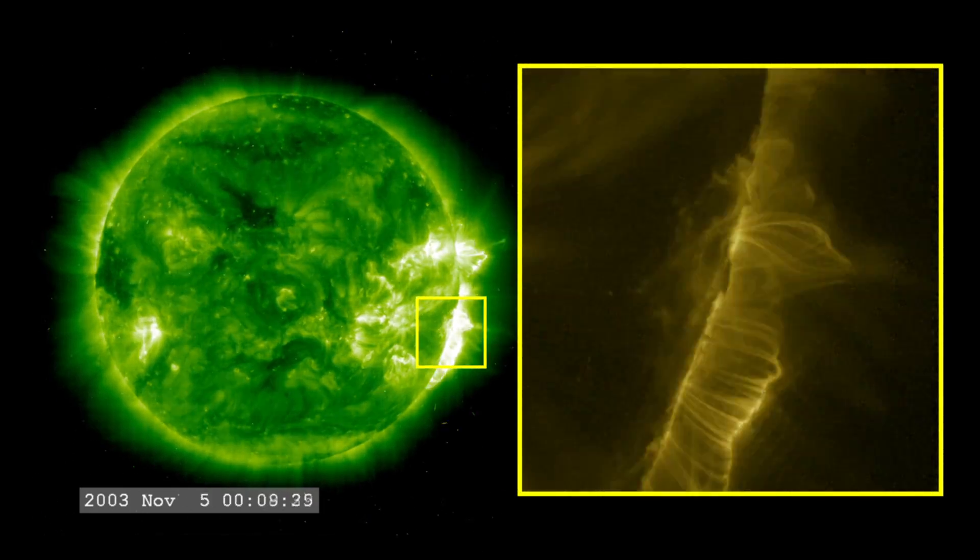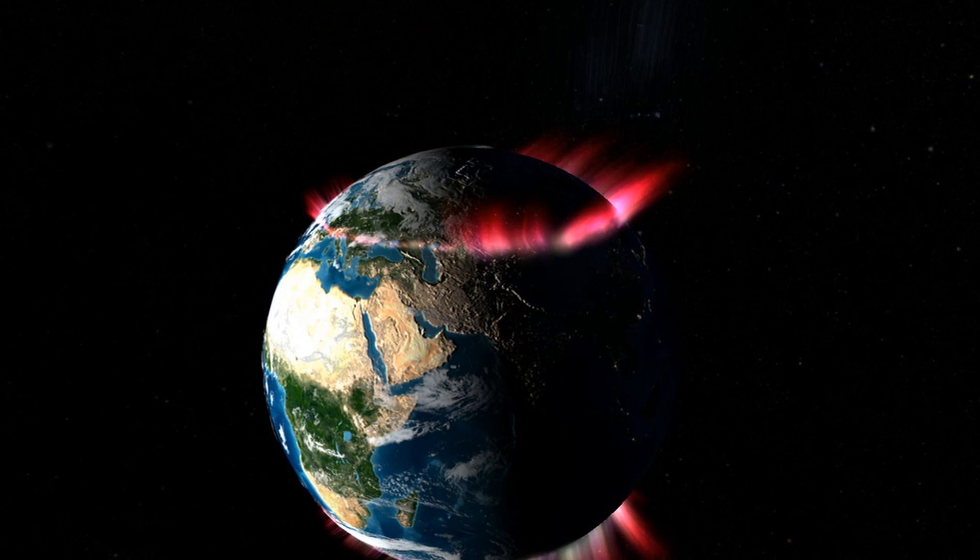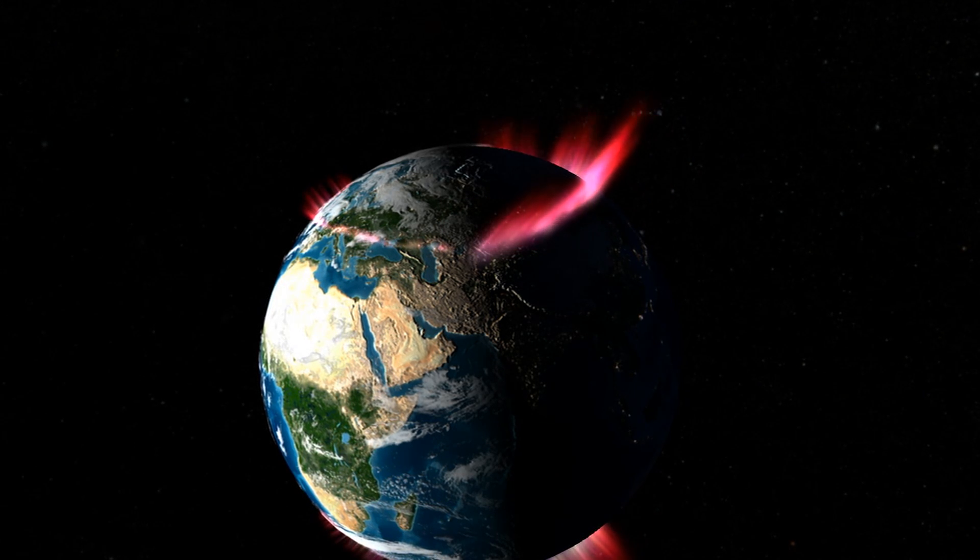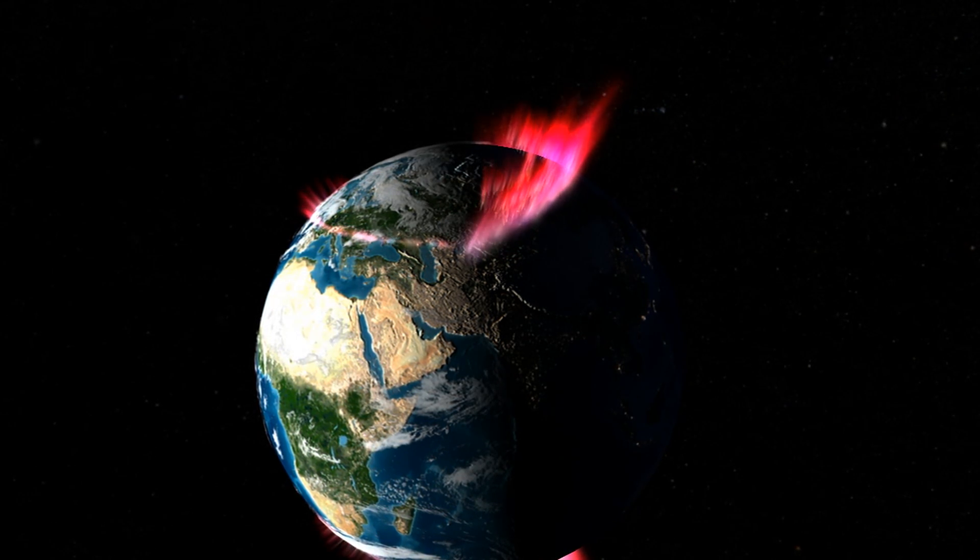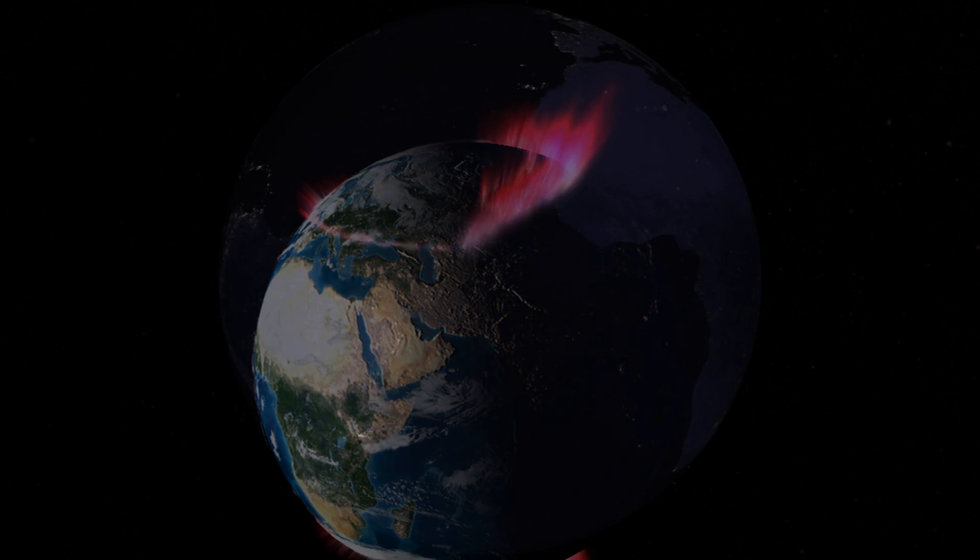A powerful X-class flare like that can create long-lasting radiation storms, which can harm satellites, and even give airline passengers flying near the poles small radiation doses. X-flares also have the potential to create global transmission problems and worldwide blackouts.